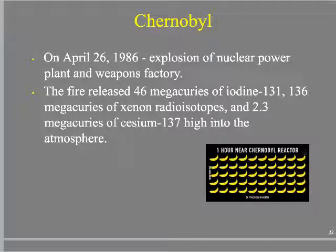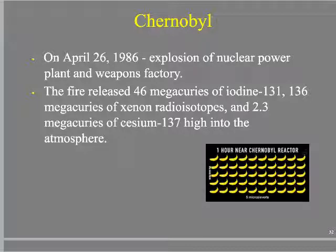The Soviets were refining uranium to make nuclear weapons in the same facility that they were producing nuclear power — equivalent to pumping gas while smoking a cigarette. On April 26, 1986, there was a huge fire and explosion. It released 46 megacuries — compared to 15 curies from Three Mile Island which had a containment unit. That's 46 megacuries of a whole buffet of stuff, not just iodine-131.